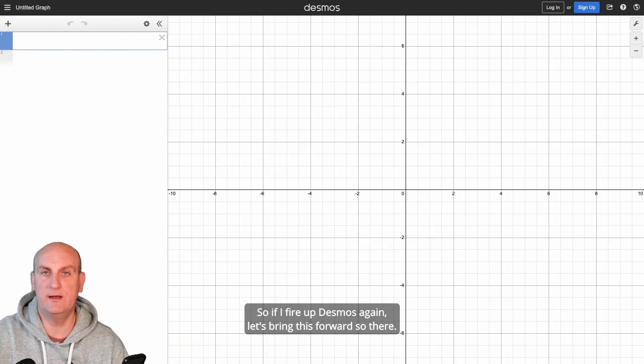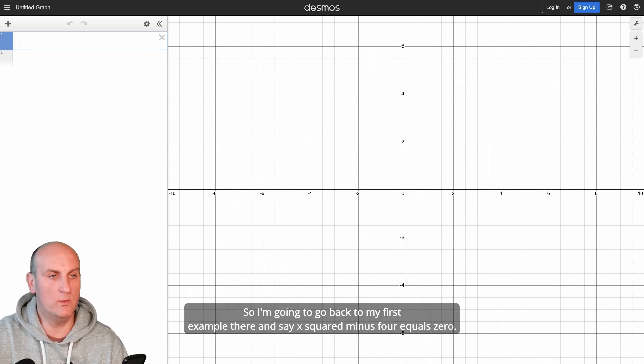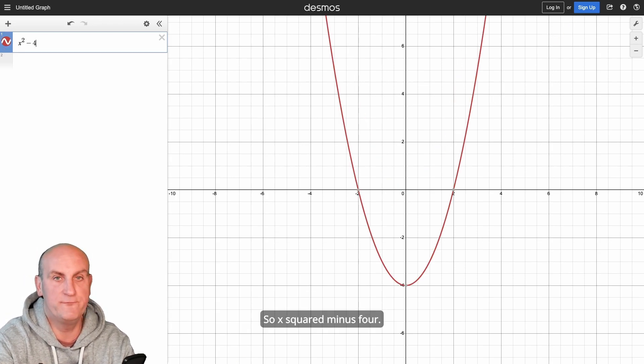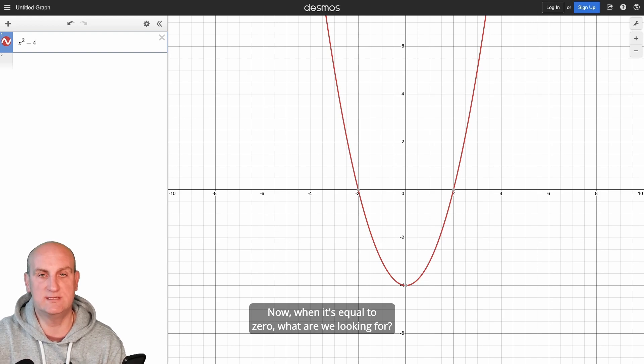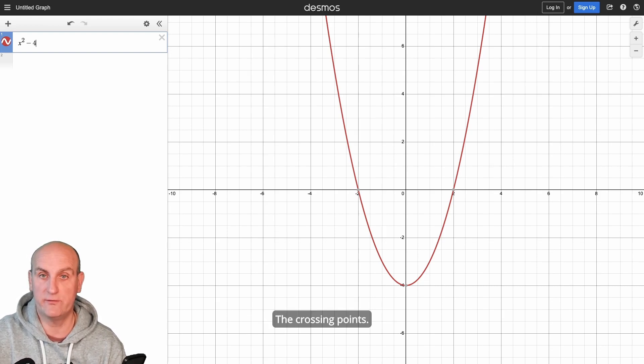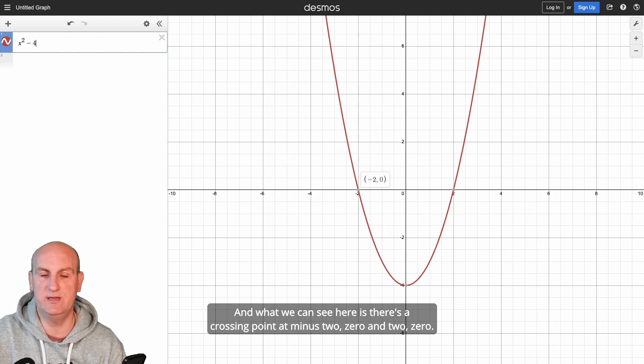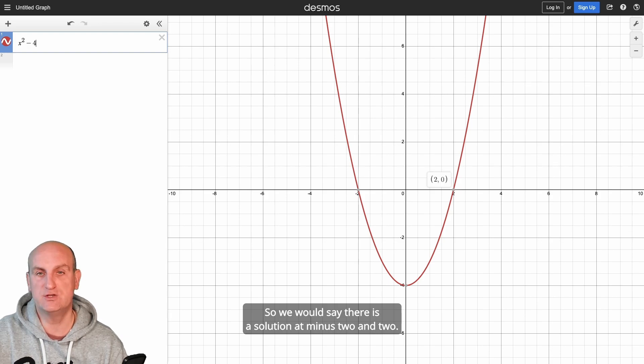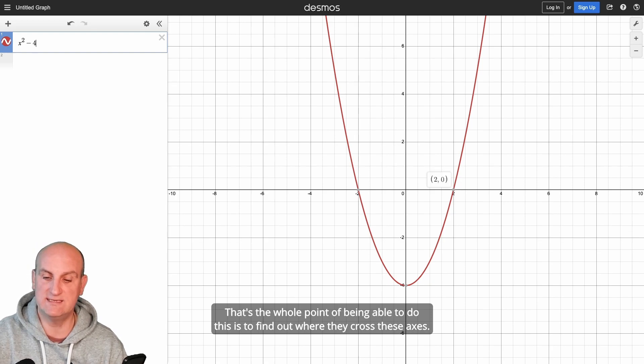So if I fire up Desmos again, let's bring this forward. So I'm going to go back to my first example there and say x squared minus four equals zero. So x squared minus four. Now, when it's equal to zero, what are we looking for? The crossing points. And what we can see here is there's a crossing point at minus two, zero and two, zero. Now, when you do that, you're only really looking for the x values. So we would say there is a solution at minus two and two. That's the whole point of being able to do this is to find out where they cross these axes.